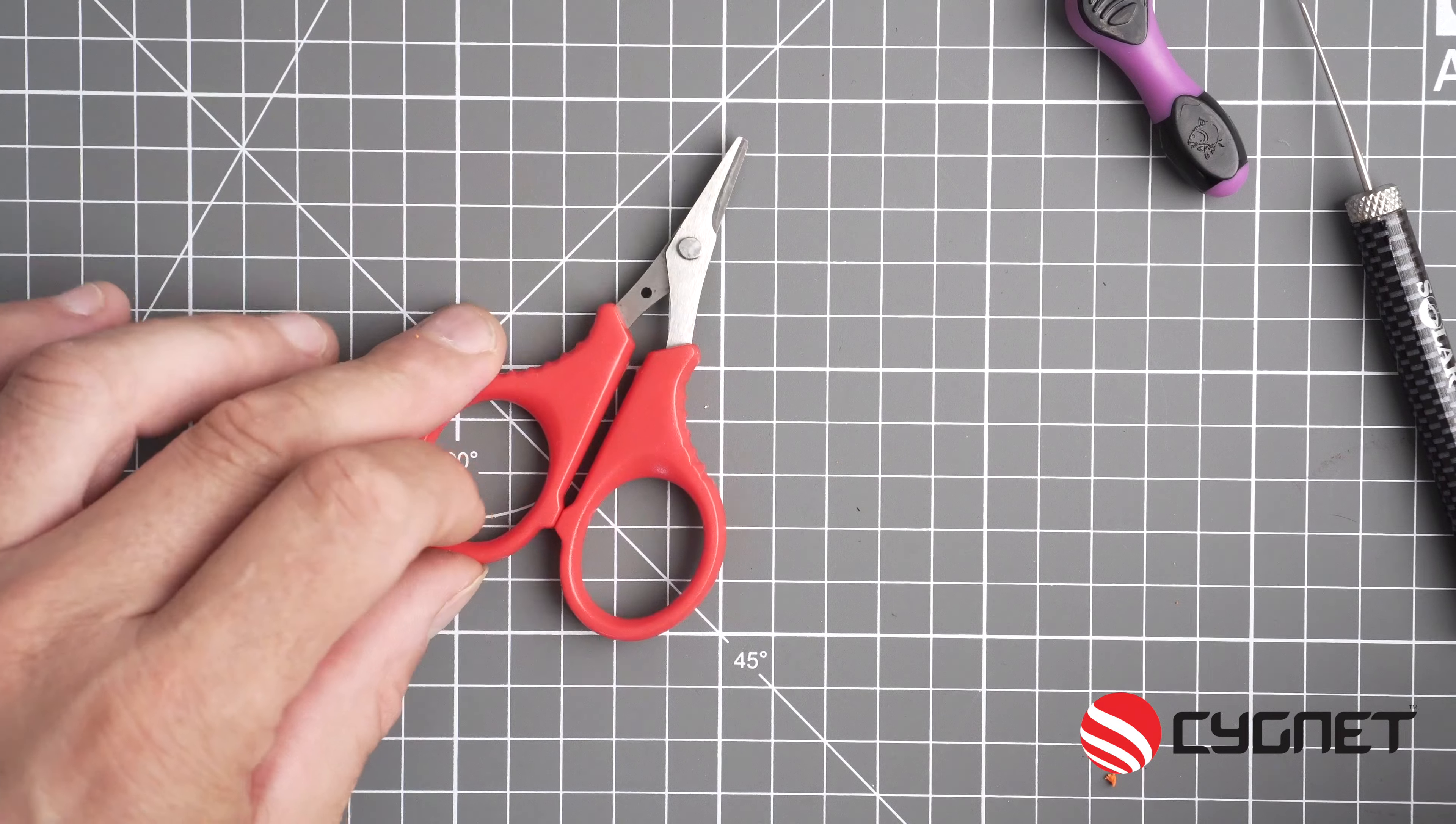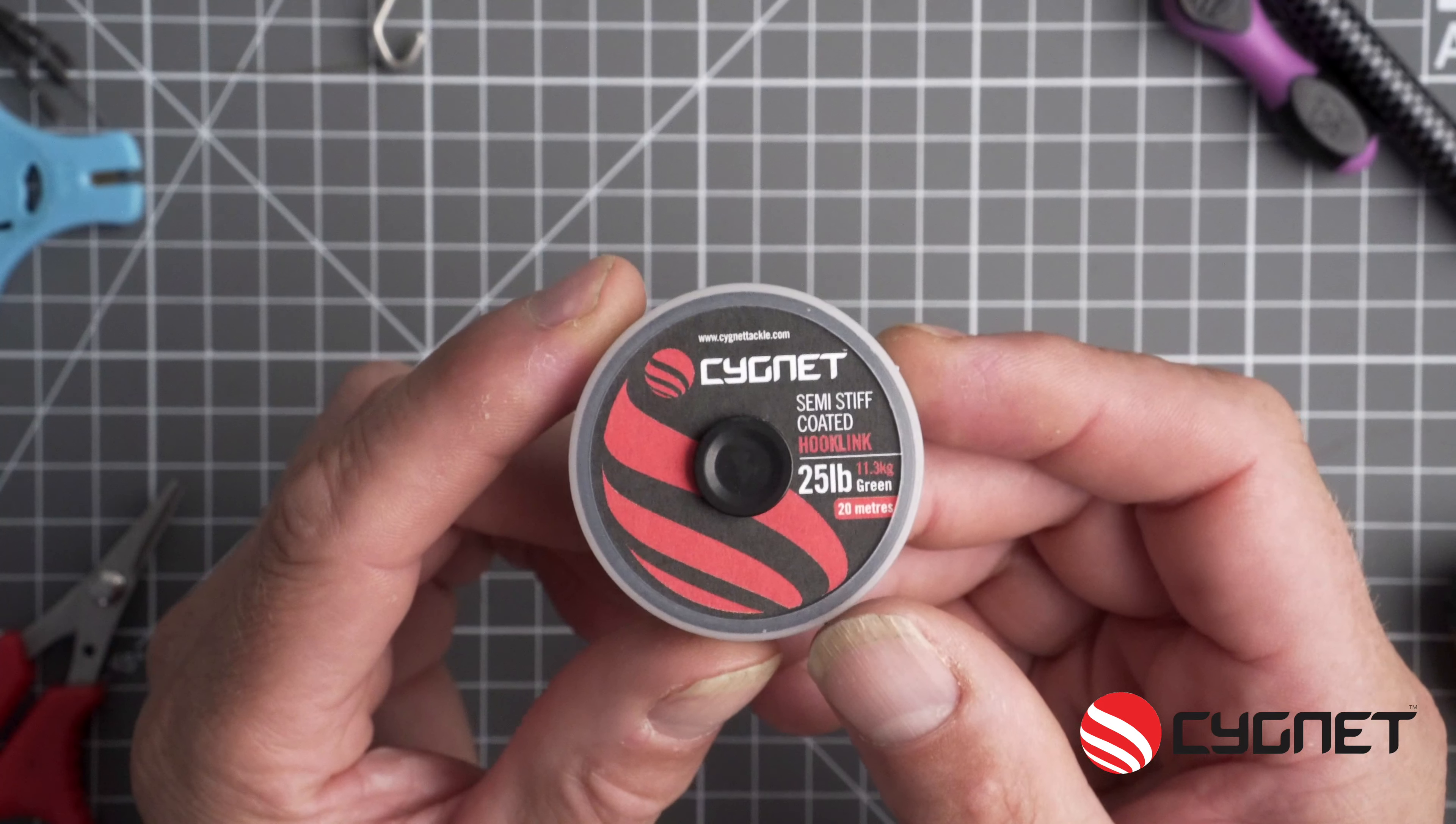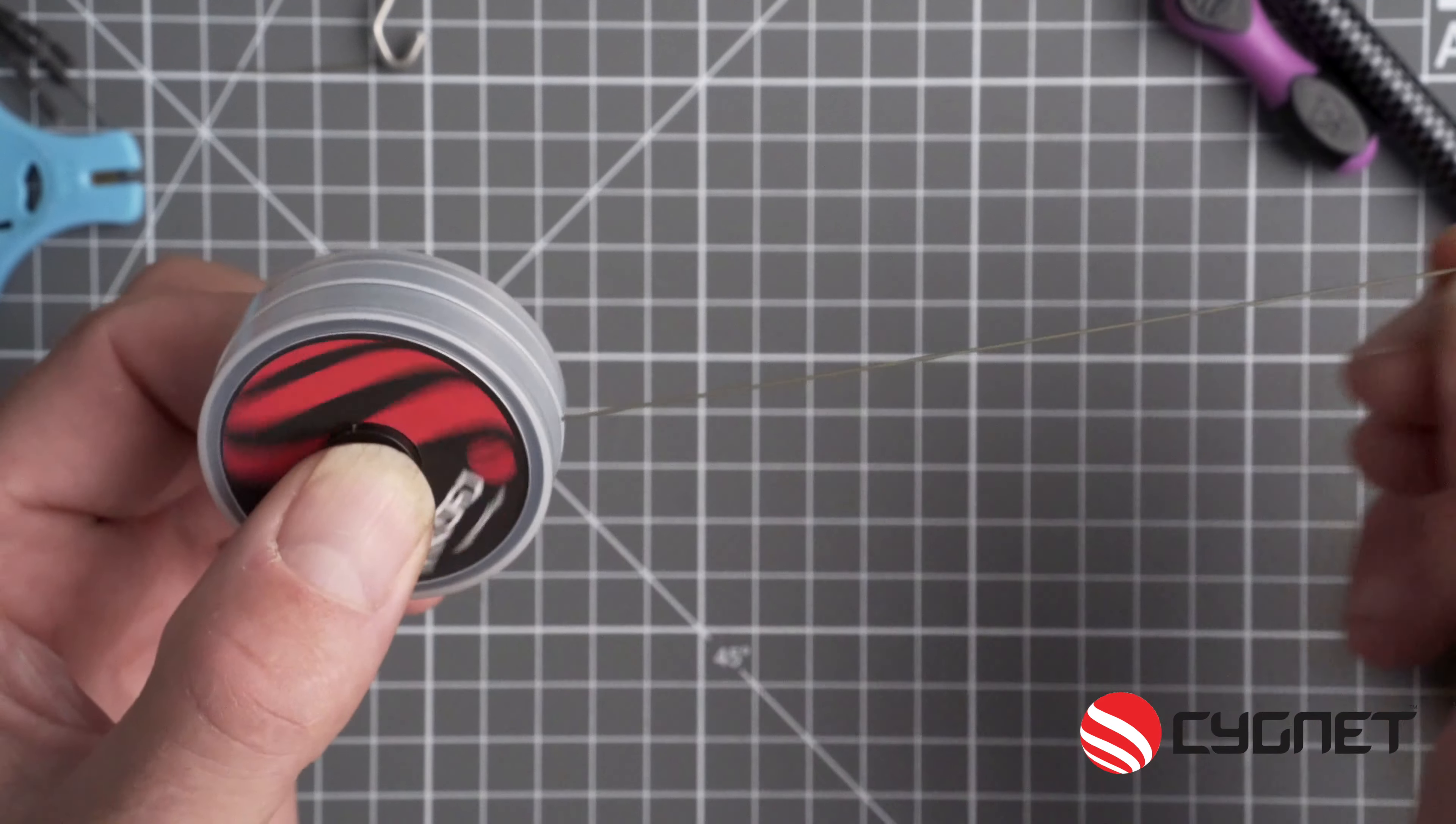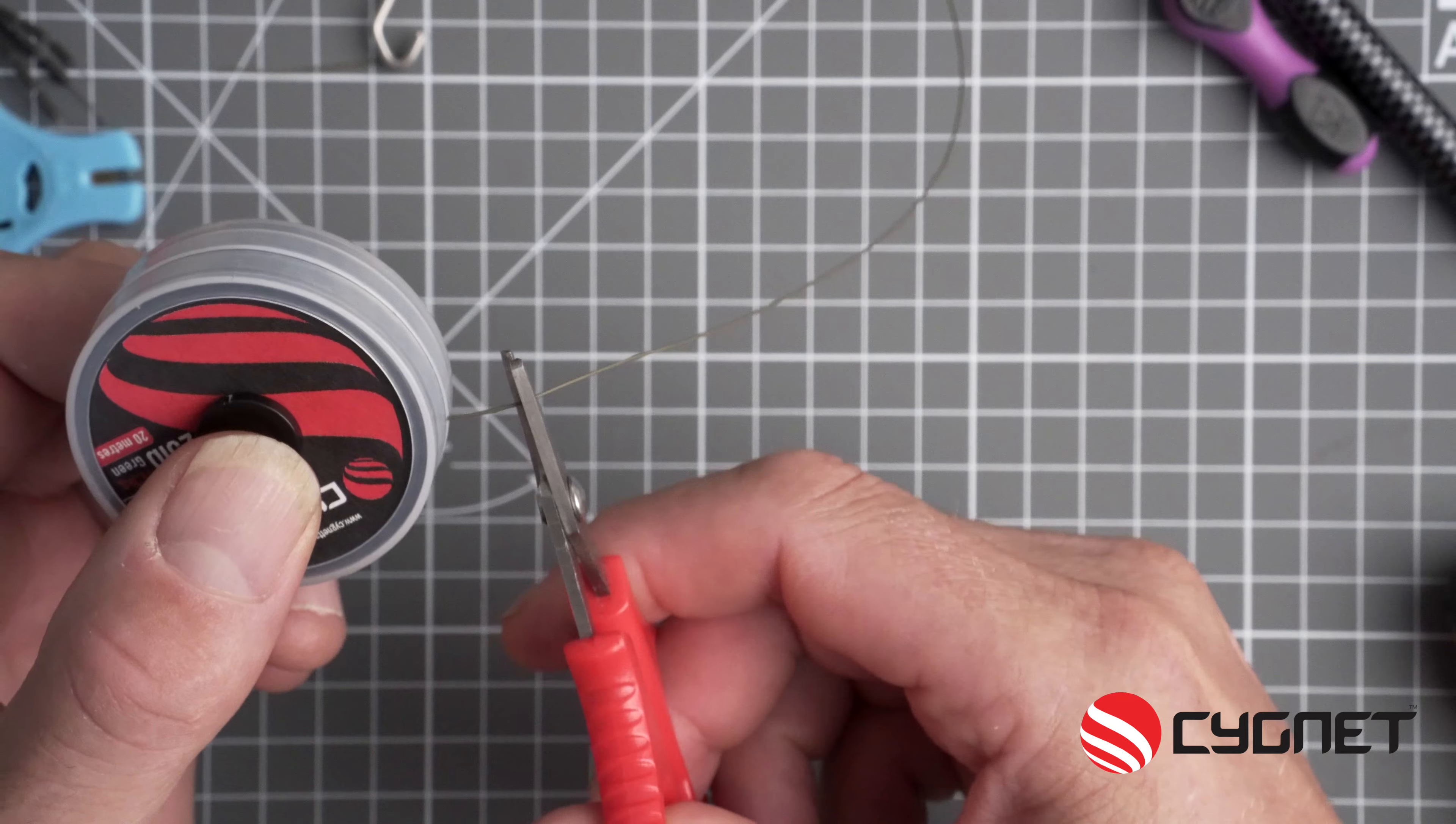Now for this three-in-one rig you need a pair of scissors, a splicing needle, a normal needle and a stripper tool. So I'm going to be using the Cygnet semi-stiff coated hook link in 25 pounds. Cut at least 12 inches of the hook link off with a sharp pair of scissors.